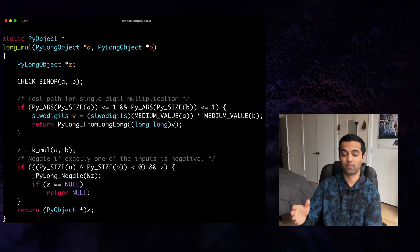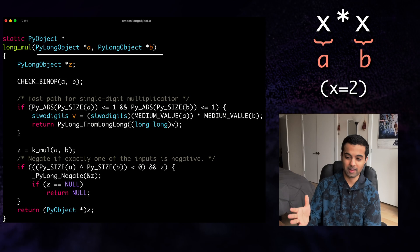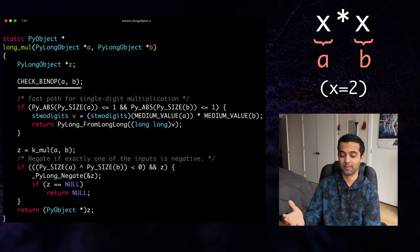So here I've pulled up the long_mul function, and you'll find that it's relatively simple. It takes in two inputs, a and b, and checks to make sure that these objects are integer types.